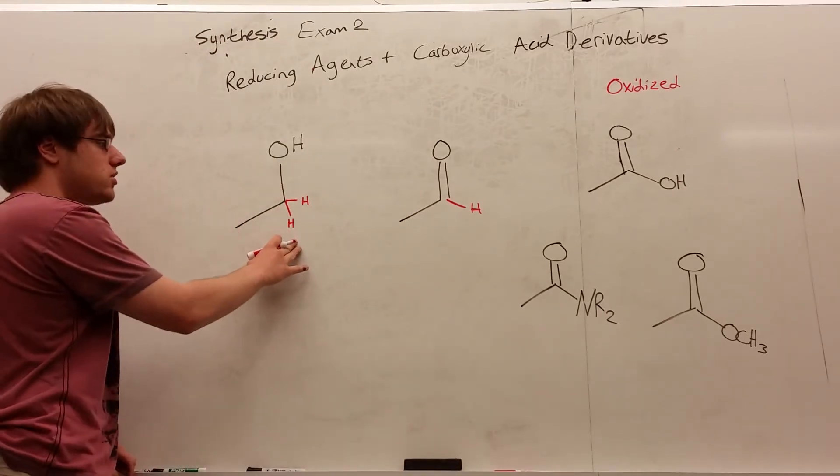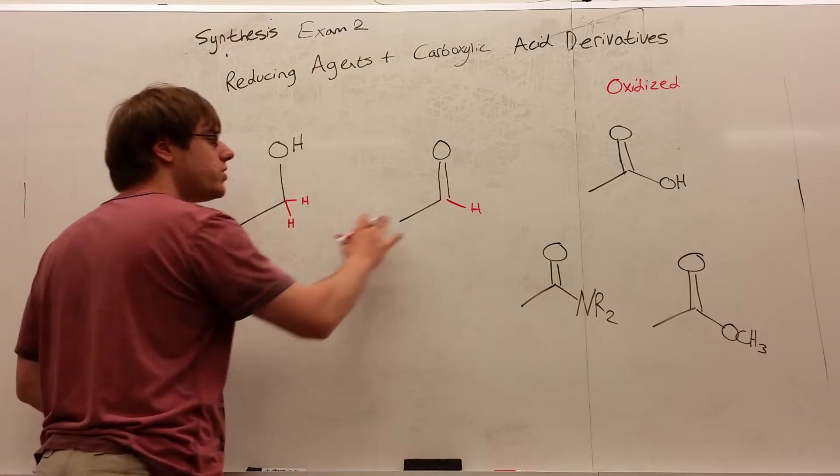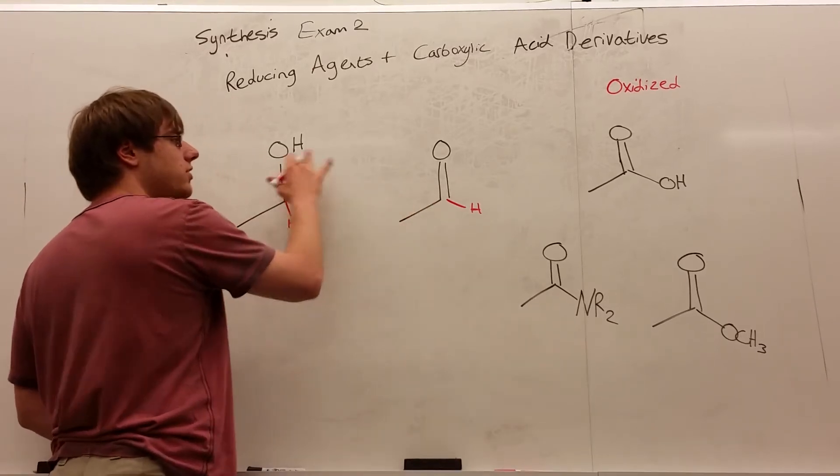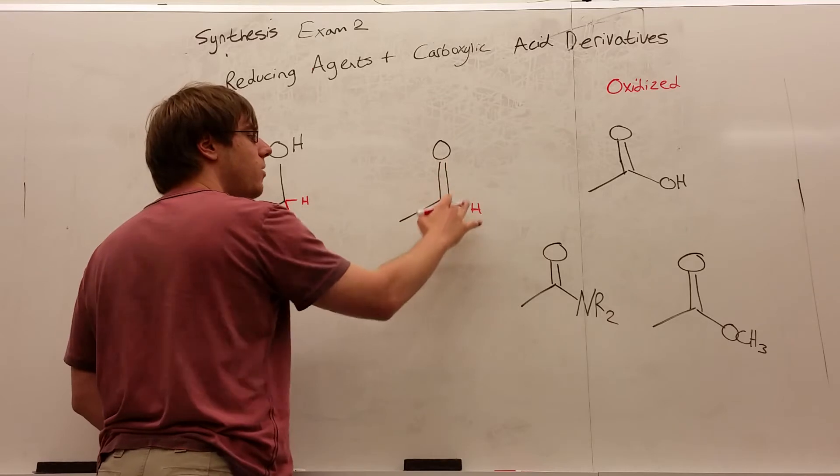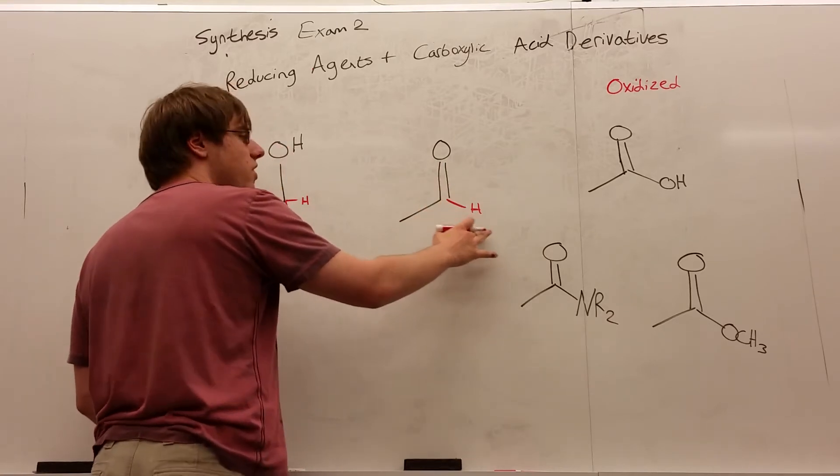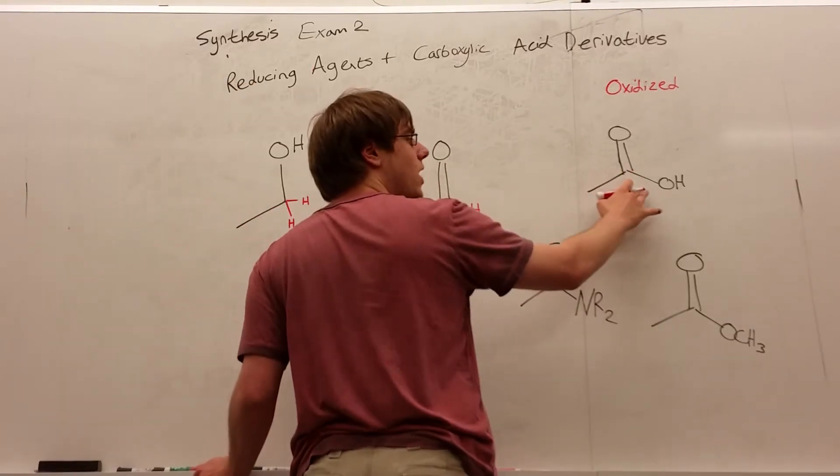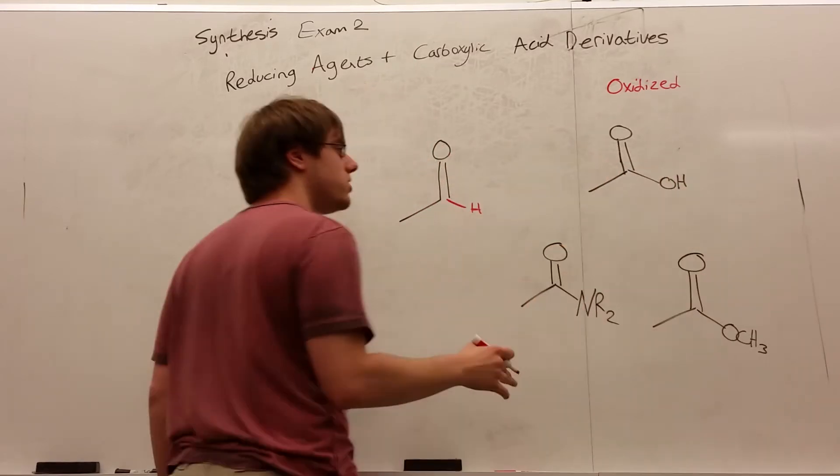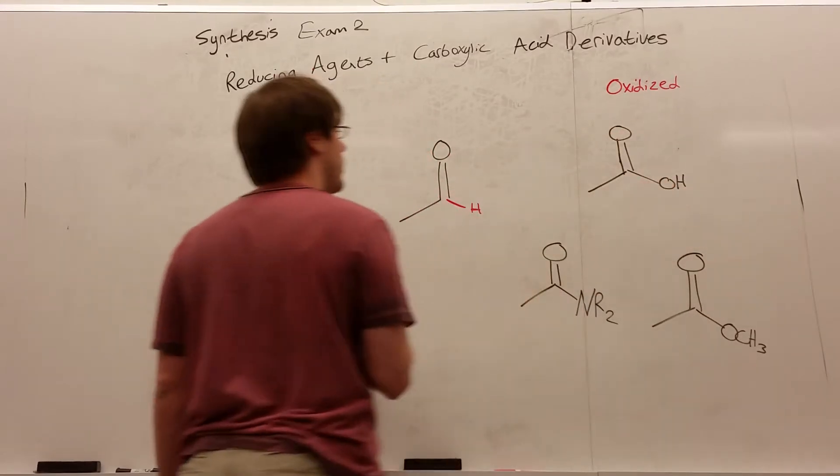And all oxidized means is you have more carbon-oxygen bonds or fewer hydrogen bonds. Notice I drew in these hydrogens in red. There are two here. You go one step further, now there's one more oxygen bond in the form of the double bond, but one less hydrogen. And then the next further step, there are no hydrogens and three oxygen bonds altogether, two from the double bond and one from the OH.